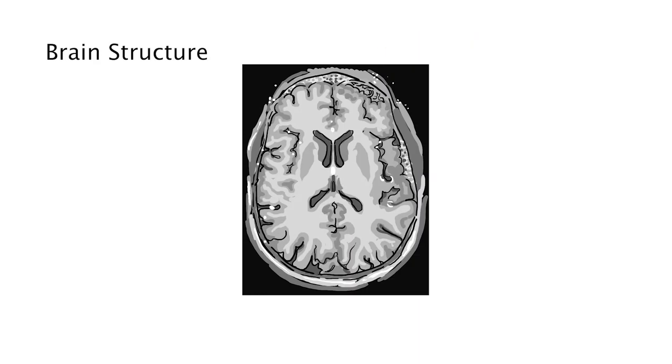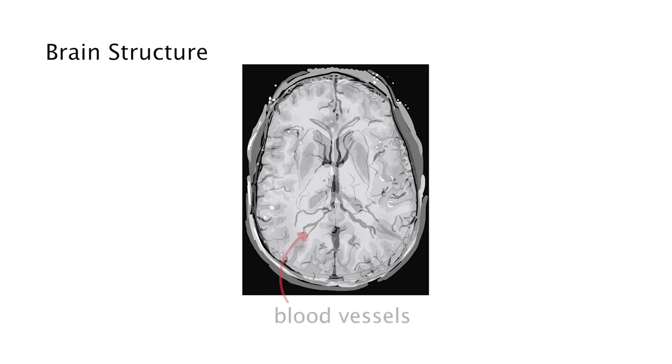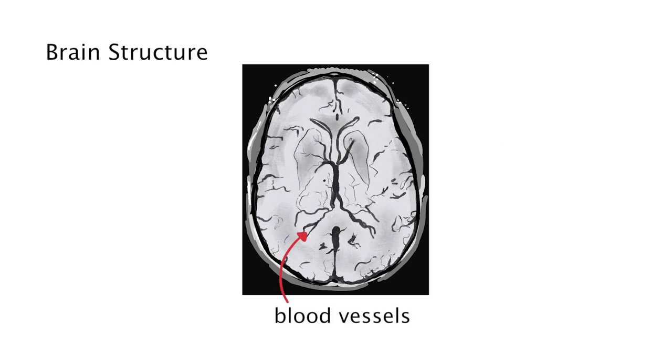A second example is this image of dark blood vessels in the brain. Here, we used an MRI measurement that is sensitive to magnetic properties of the blood. This makes it possible to create images where the blood vessels stand out more than the surrounding tissue.